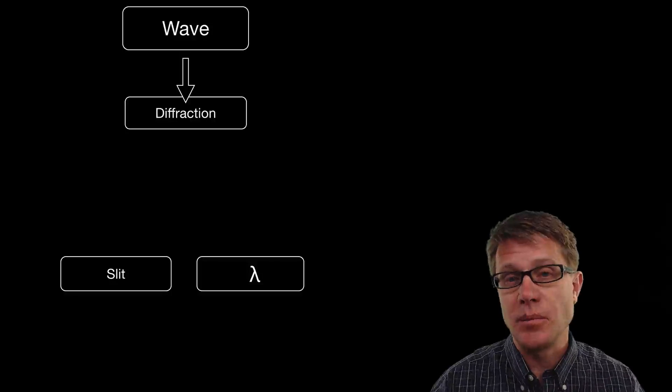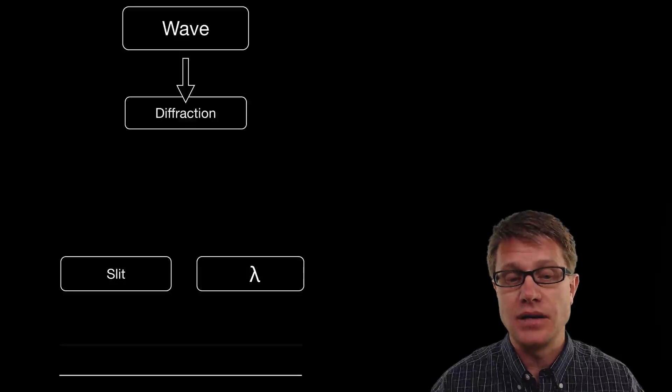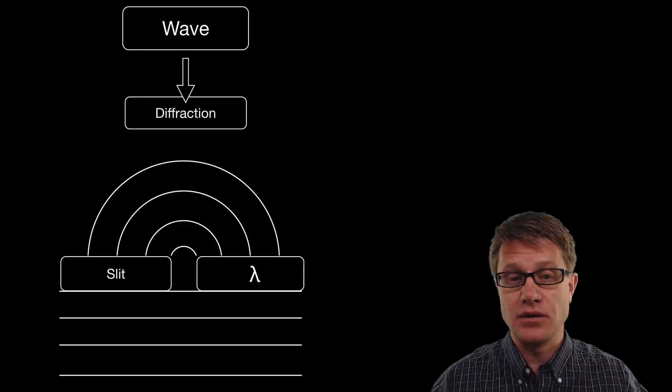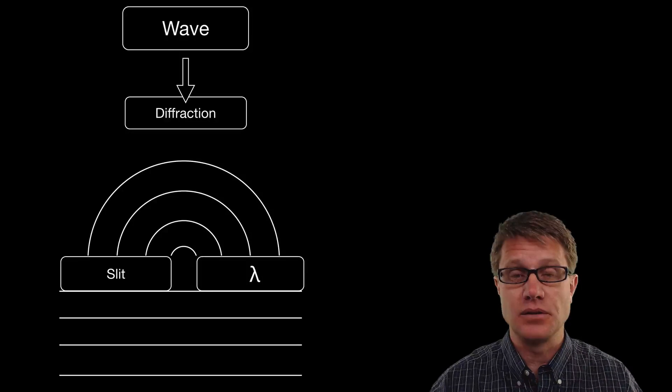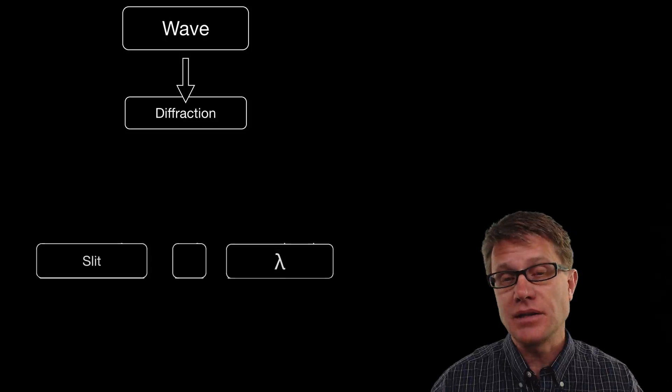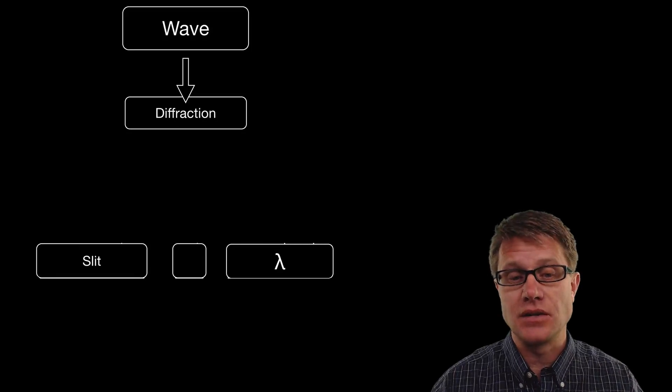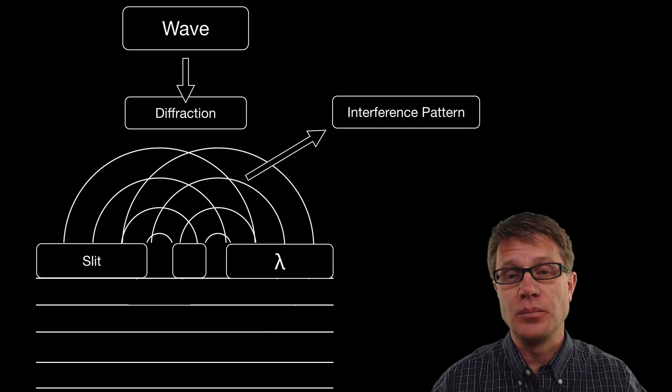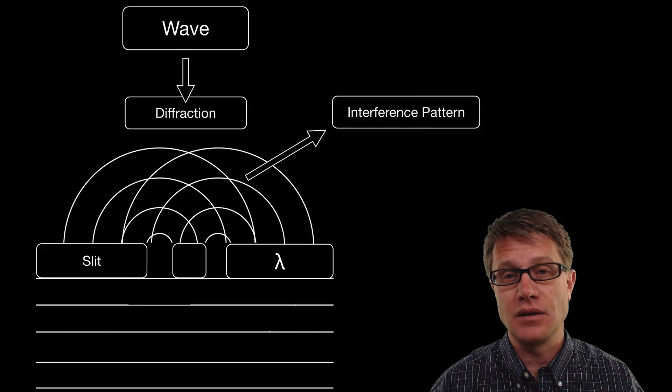And so wave diffraction remember occurs if we ever have waves hitting a gap where that gap is around the size of the wavelength you get this diffraction pattern. We learned about that in the last video. But let's say you have two slits that are about the size of the wavelength. What you get are these double diffraction patterns and you will build these interference patterns where they come together.